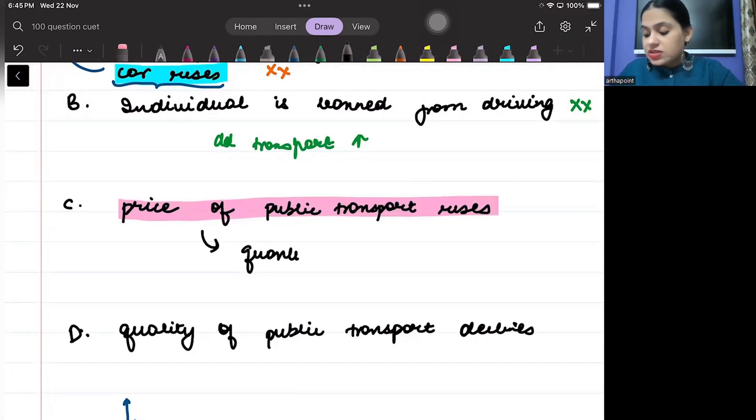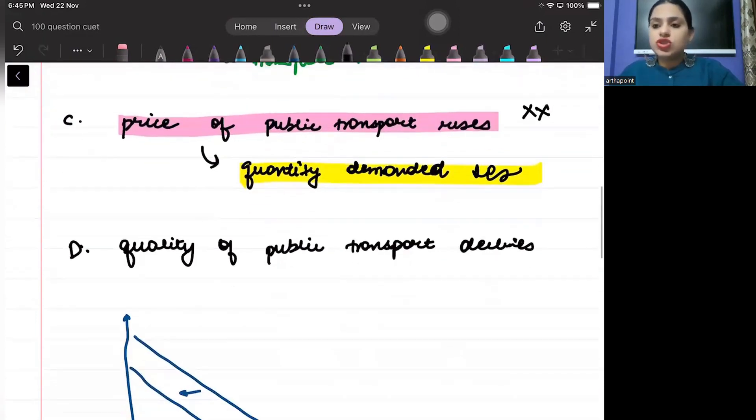Rather, what decreases is quantity demanded decreases. So, this cannot be correct. There will be no shift of the curve.